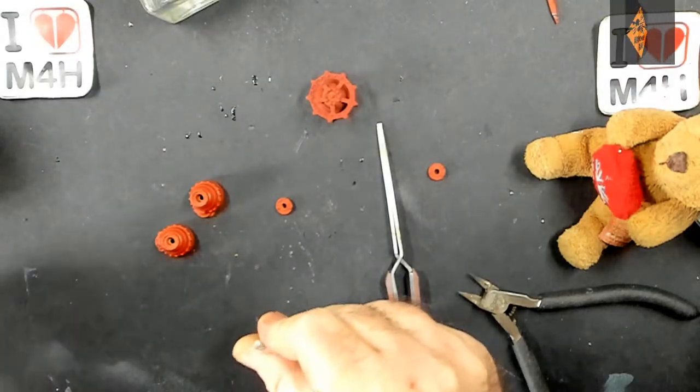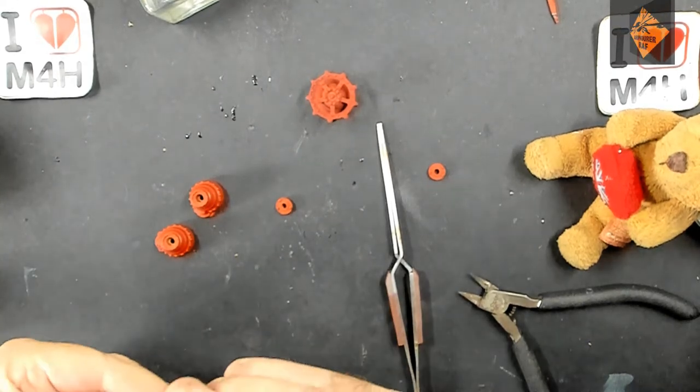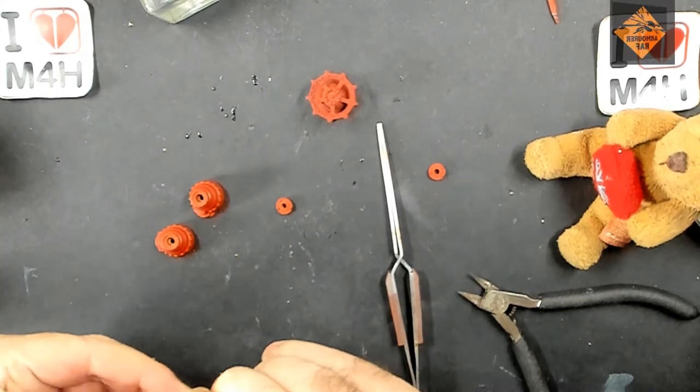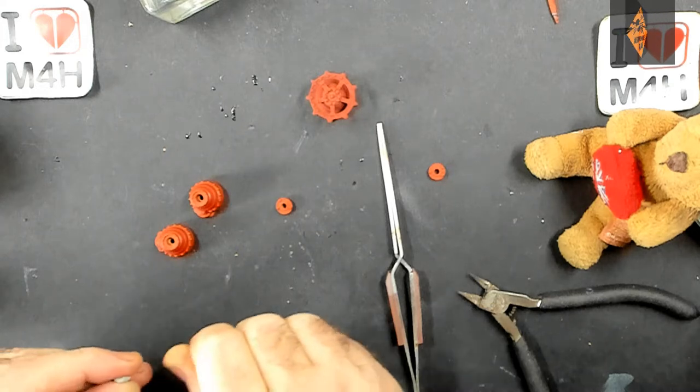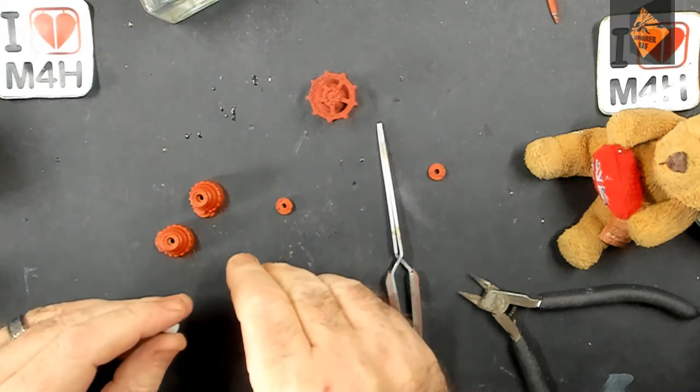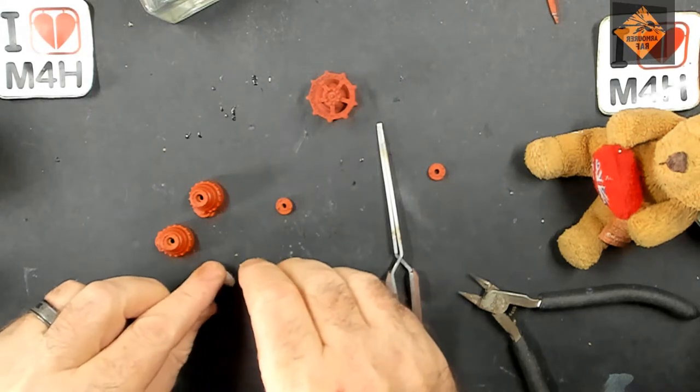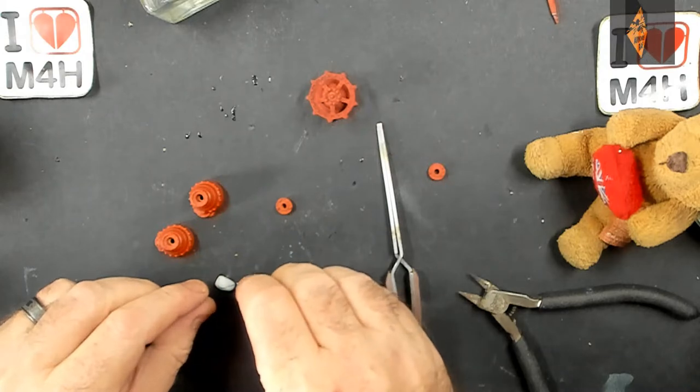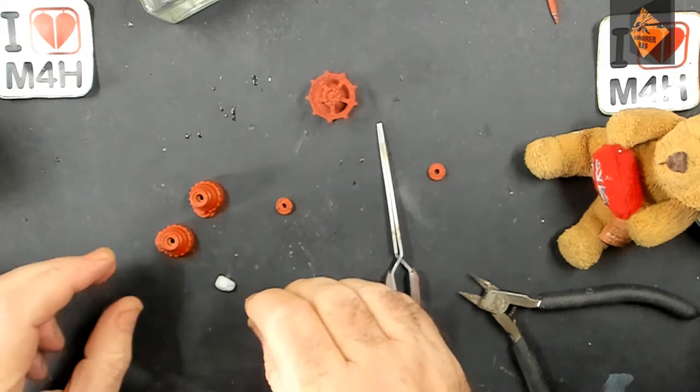Well I've done it again. I've lost a part. This time it's the polycaps for the front drive wheel. But have no fear, I sorted it out. I used Blu-Tac. So without further ado, let's crank up the speedy-uppy thing and see how I got it sorted.